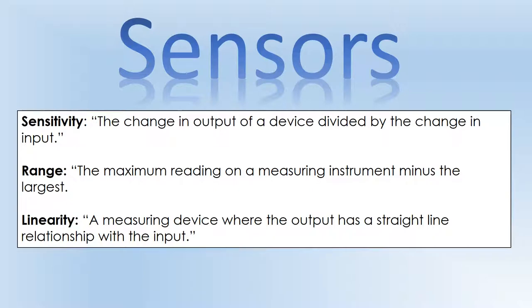The sensitivity is the change in output of a device divided by a change in input. The range is the maximum reading minus the smallest reading. And linearity is when the output has a straight line relationship with input. So that's all very vague and not very specific. So let's actually see how this applies to a thermometer.